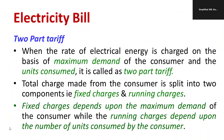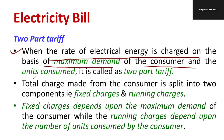Two-part tariff comprises of two components. One component is called fixed charge and the other one is called running charge. When the rate of electrical energy is charged on the basis of maximum demand and the number of units consumed by the consumer, the total electricity charge is going to depend on maximum demand as well as number of units consumed.